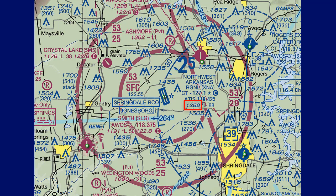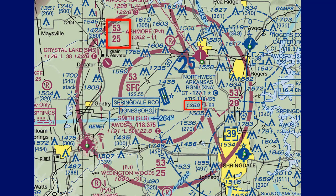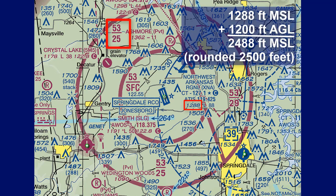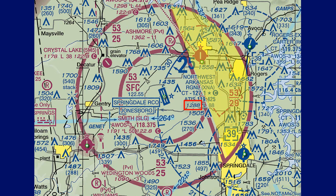The shelf area has two parts. The larger C-shaped western part starts at 2,500 feet — the elevation of 1,288 feet MSL with 1,200 feet AGL added gives 2,488 feet, rounded up to 2,500 feet MSL, and reaches 5,300 feet MSL as expected. The smaller eastern part of the shelf starts at 2,900 feet MSL, likely due to higher elevation on that side, and rises to 5,300 feet MSL.